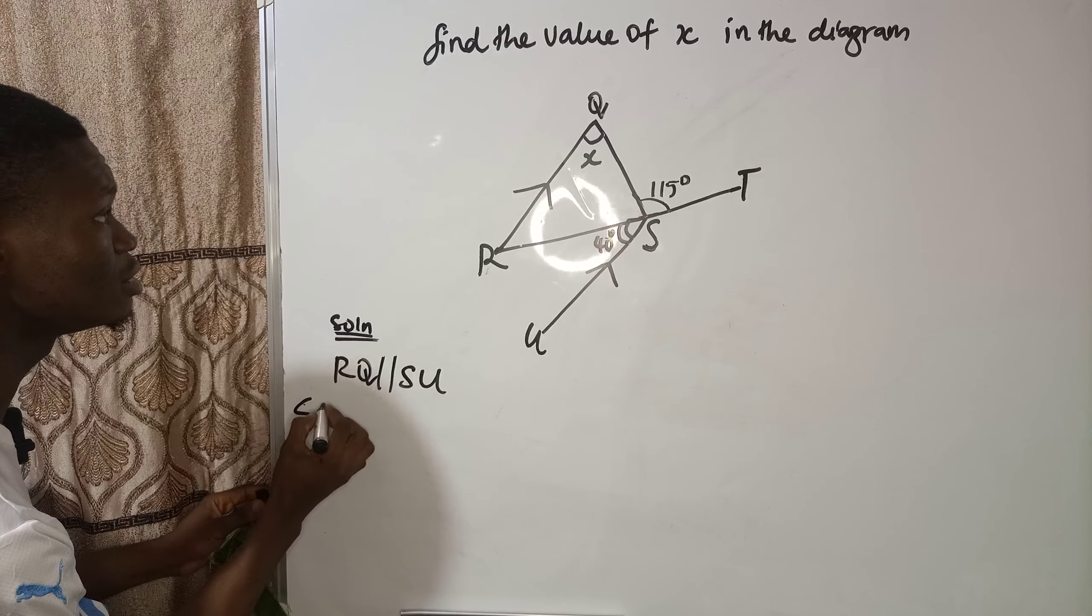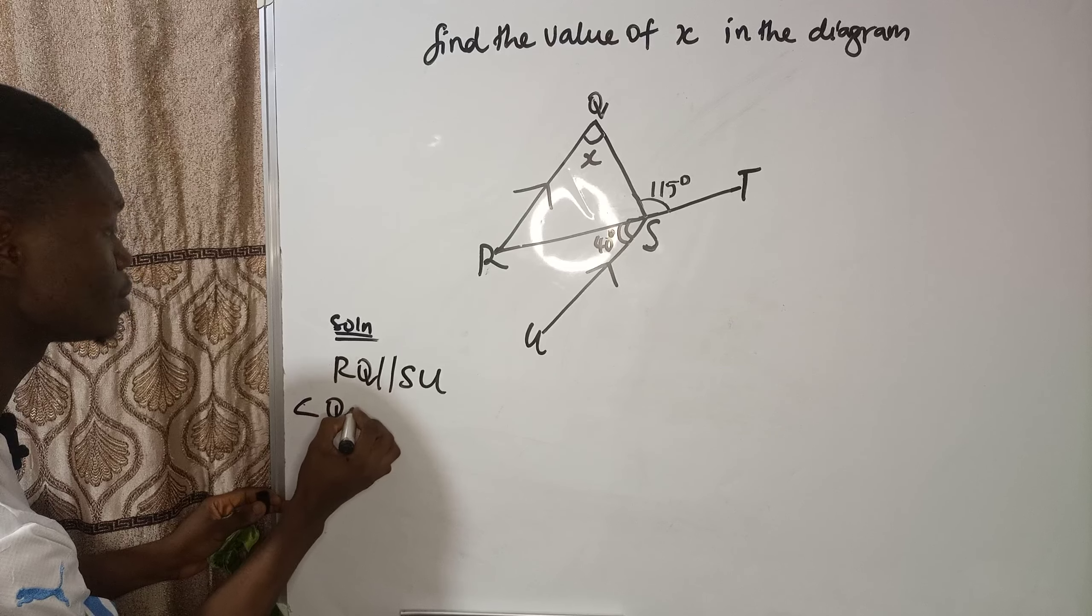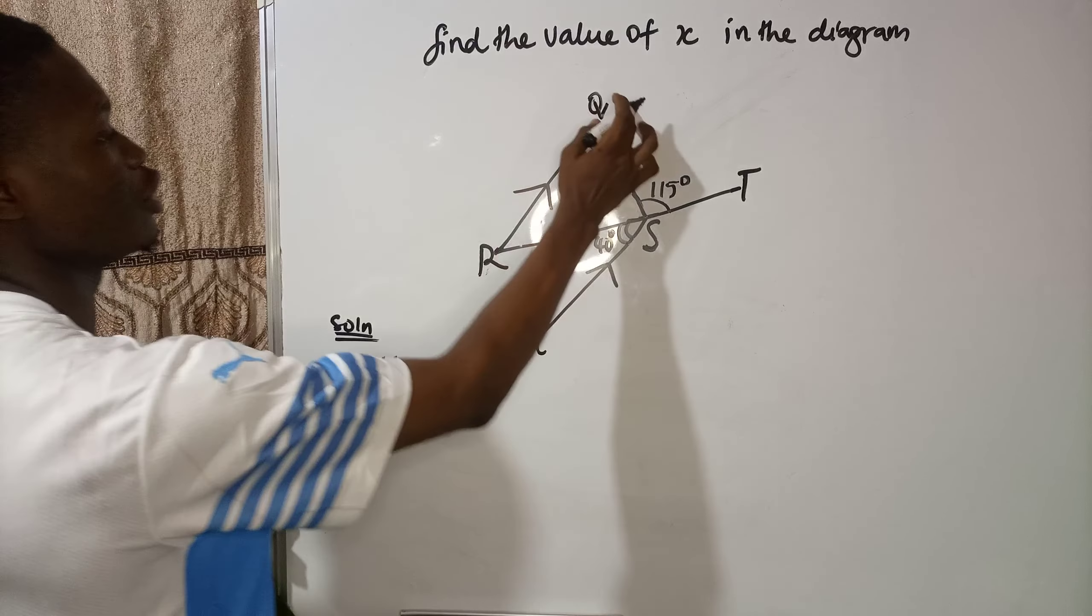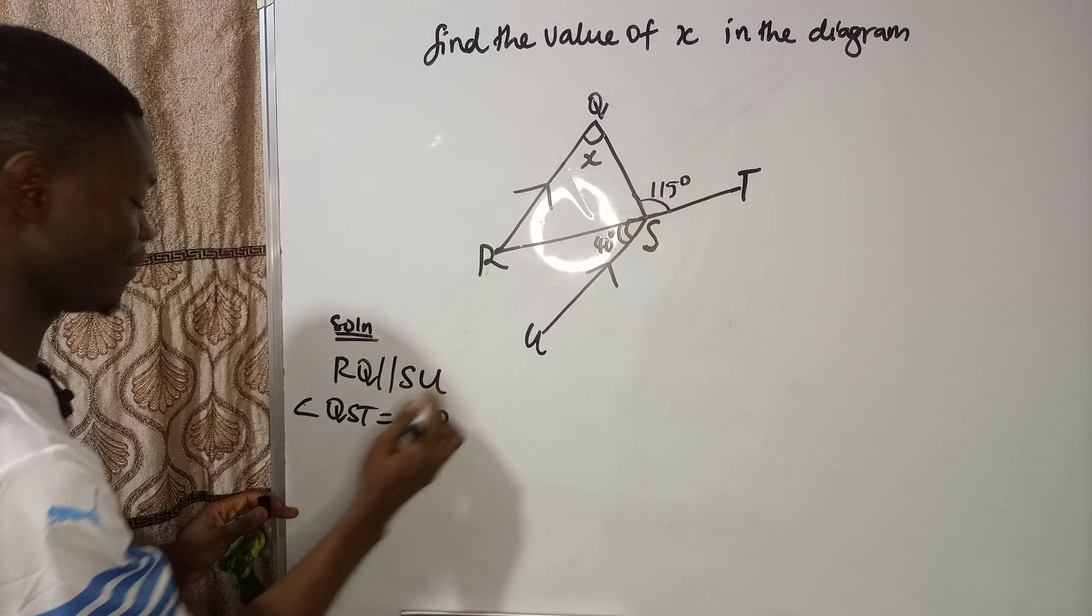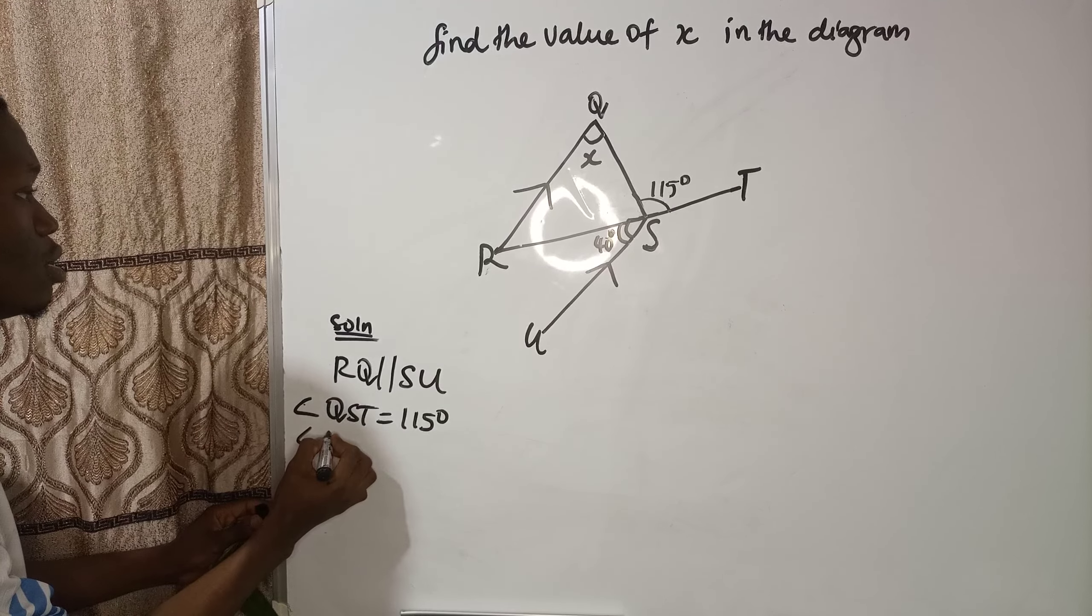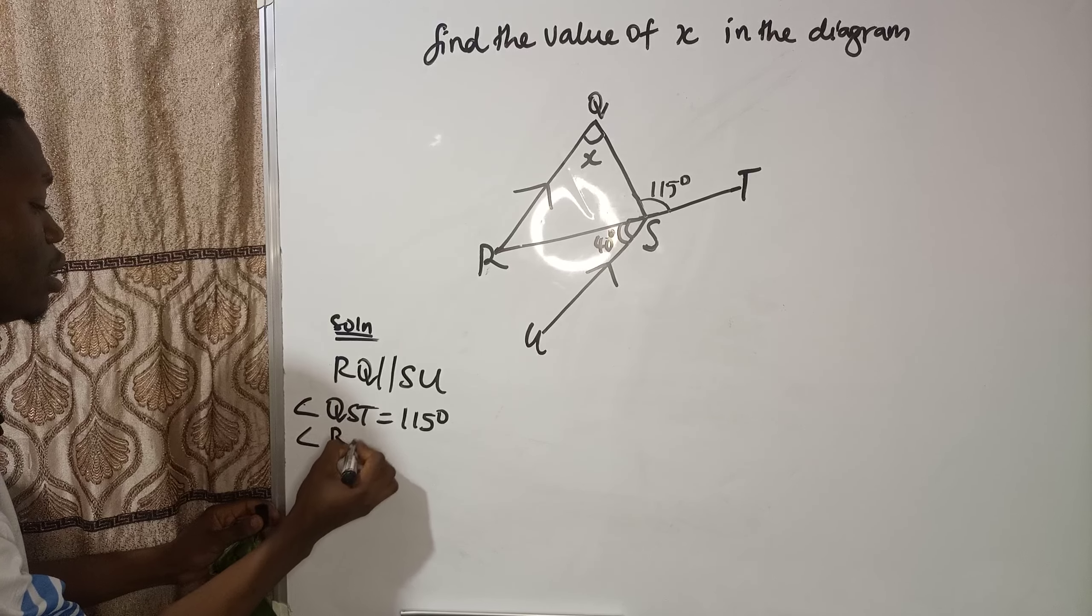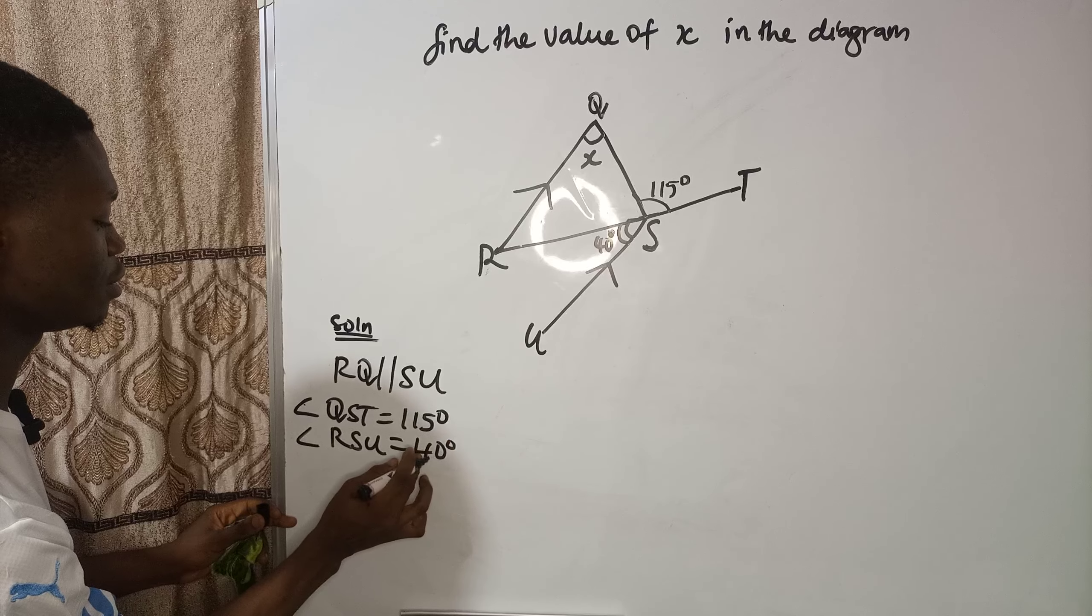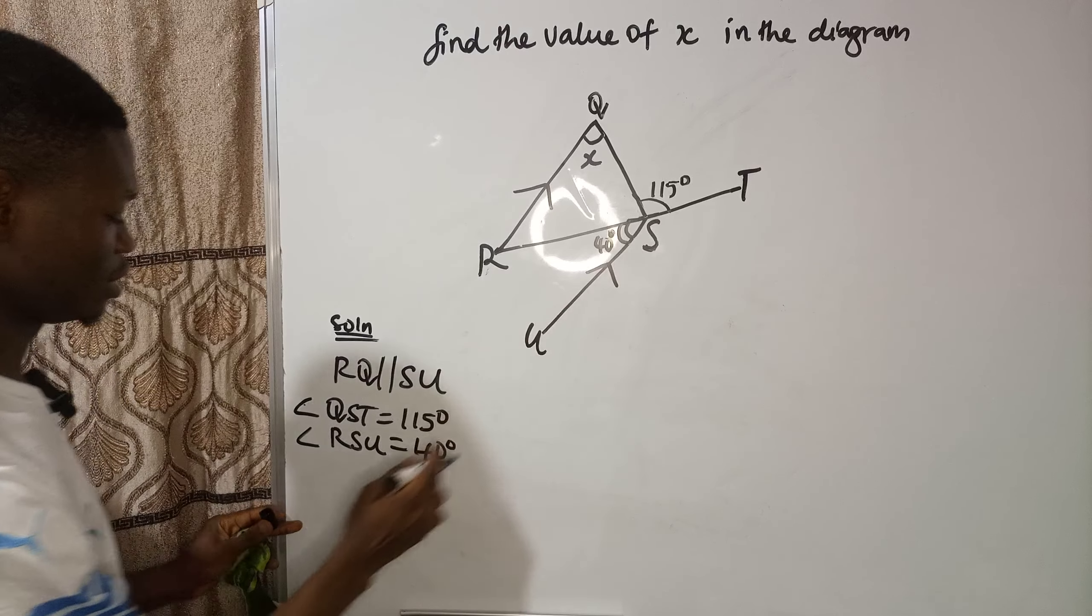Now we know that angle QST is equal to 115 degrees. Then angle RSU is equal to 40 degrees.